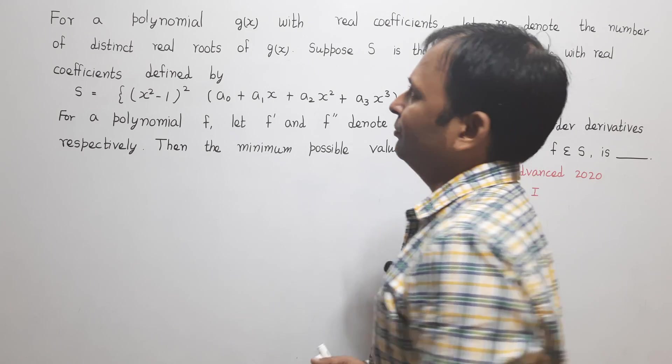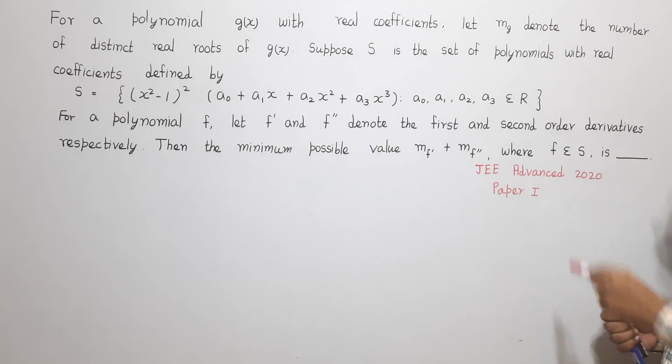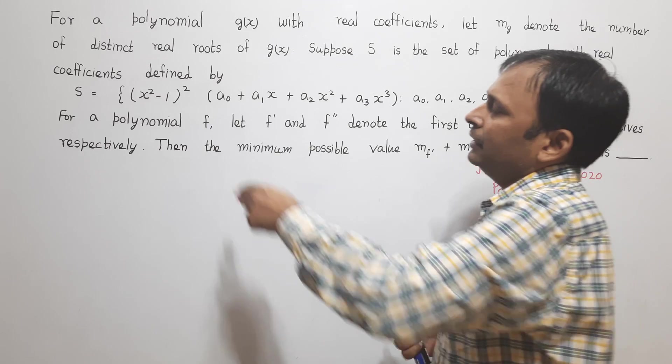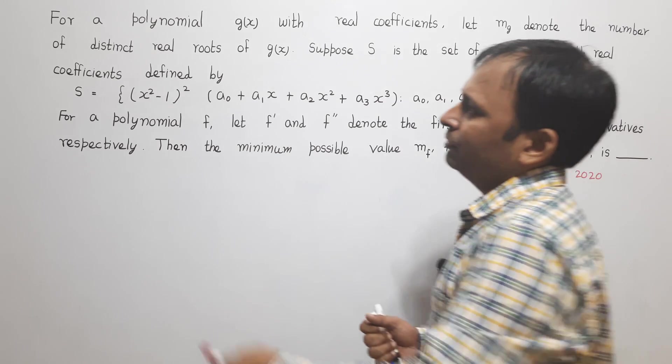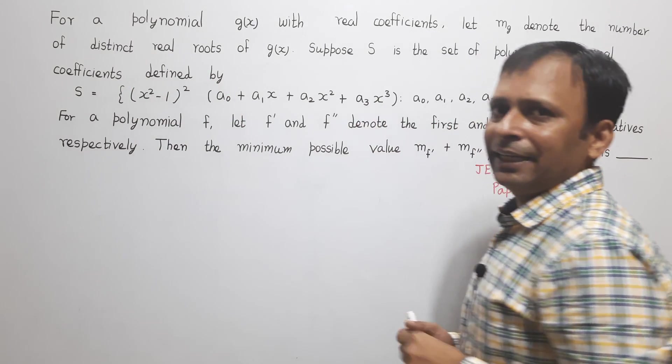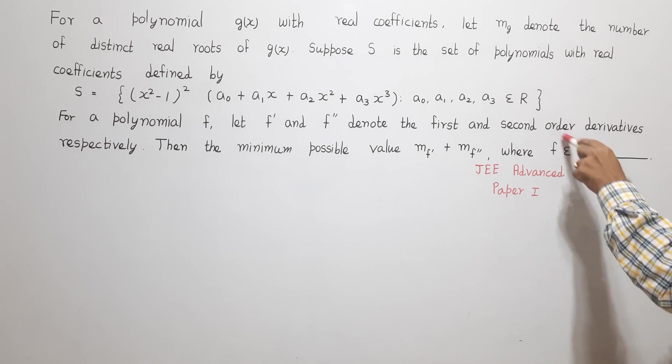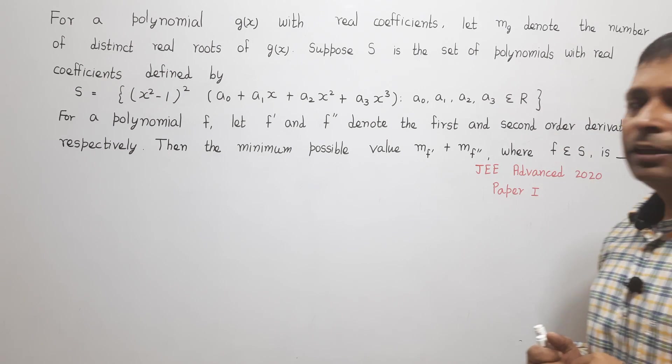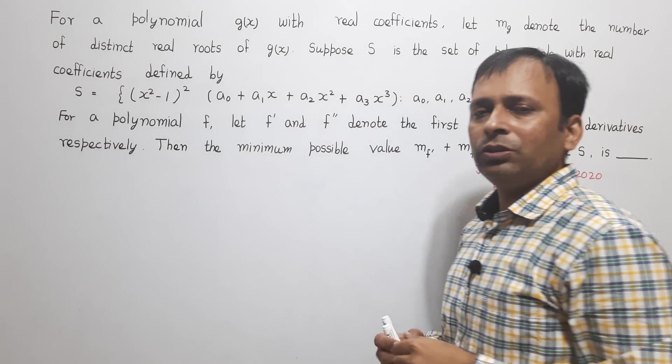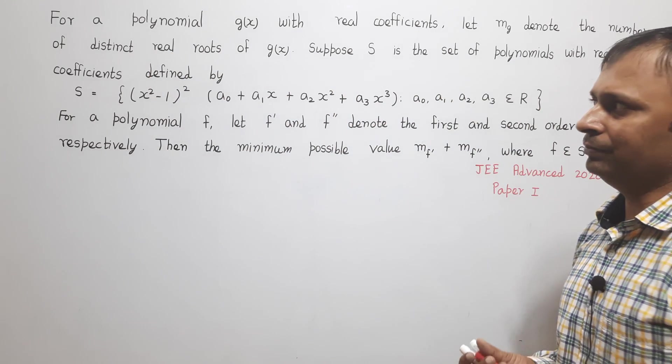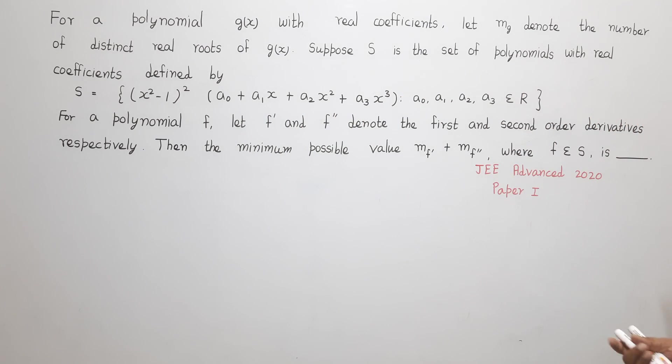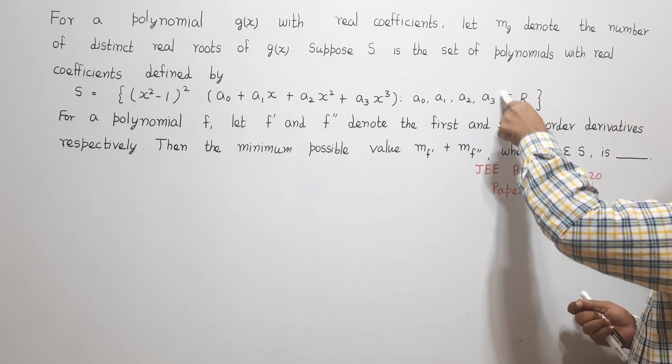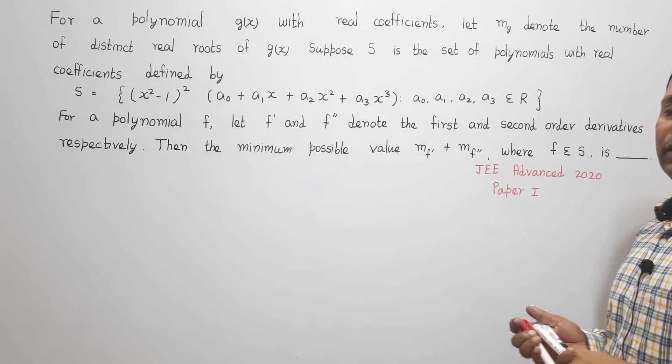Now, here the first thing is in the question they have defined M_g as the number of distinct real roots of the polynomial g(x) and then they have given us a set. This set S has a number of polynomial functions which have (x²-1)² as the common factor and then they have defined something a₀, a₁, a₂, a₃ form of polynomial where these numbers are real coefficients.